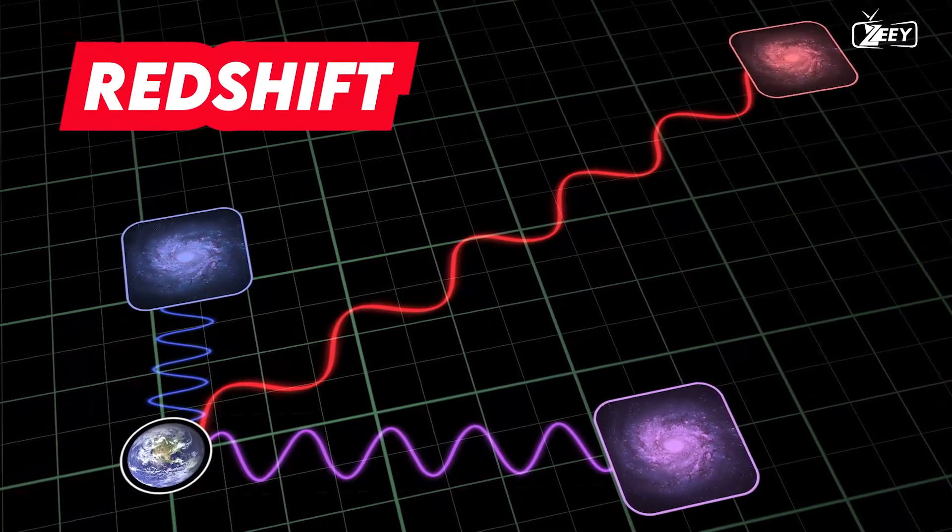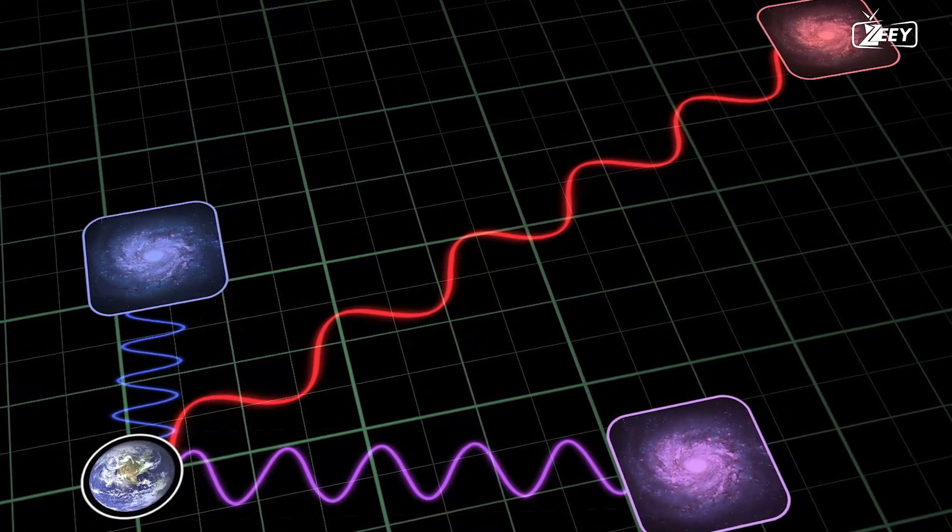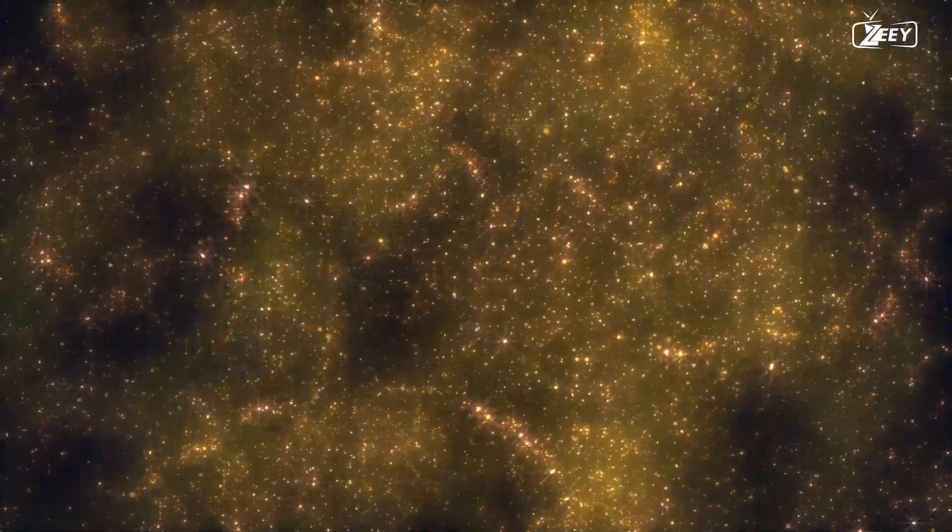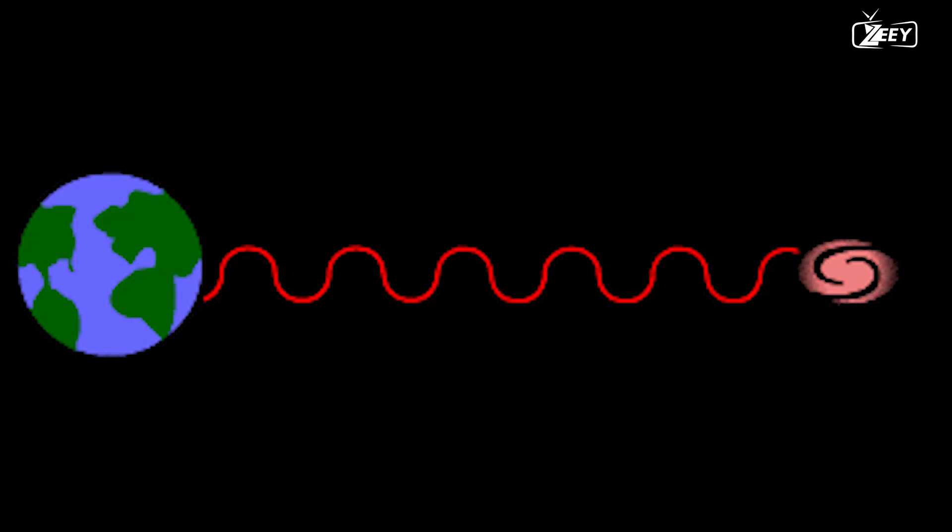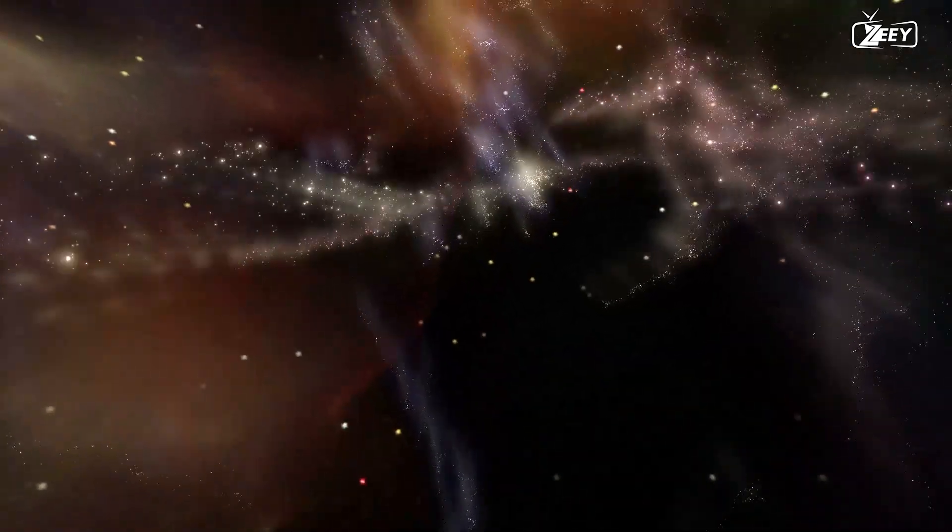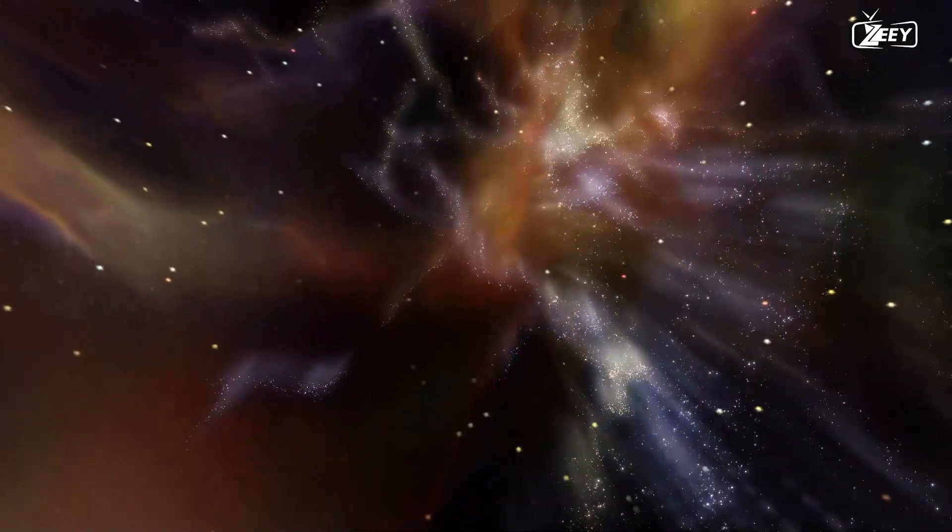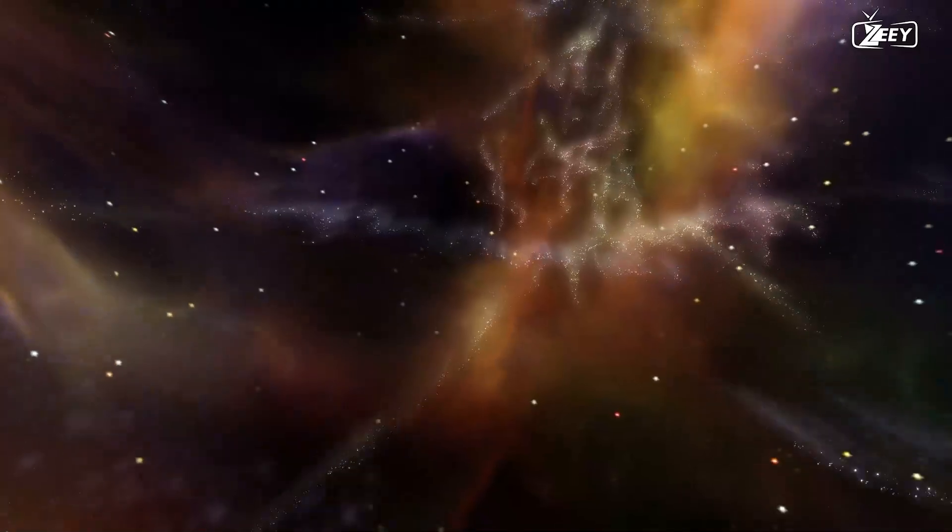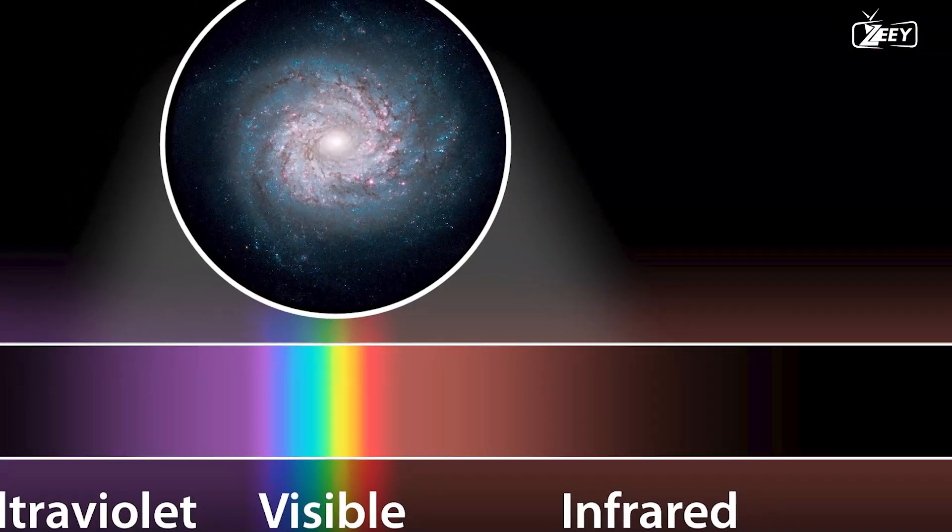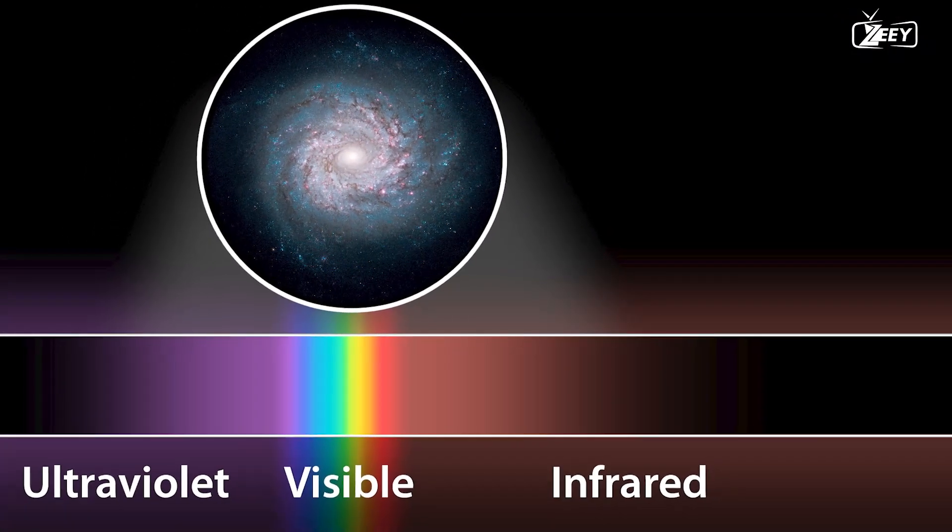Redshift is the name given to the phenomena that happens as light stretches due to the expansion of the cosmos, as proved by Hubble's observations. Because light waves are stretched out as they travel over an ever-expanding cosmos, light from a distant galaxy appears redder. The color of the galaxy changes from blue to red as one goes further into space.